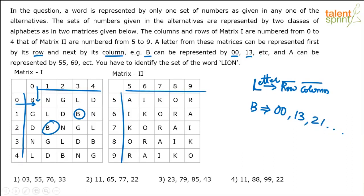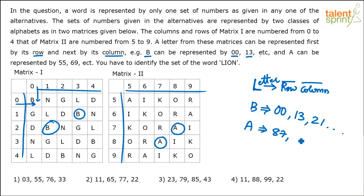For example, if I want to look at A, how can A be represented? Multiple ways. A here is in the 8th row and 7th column, so 87. A here is 7th row and 8th column, so 78. A here is 5th row and 5th column, 55, and so on.